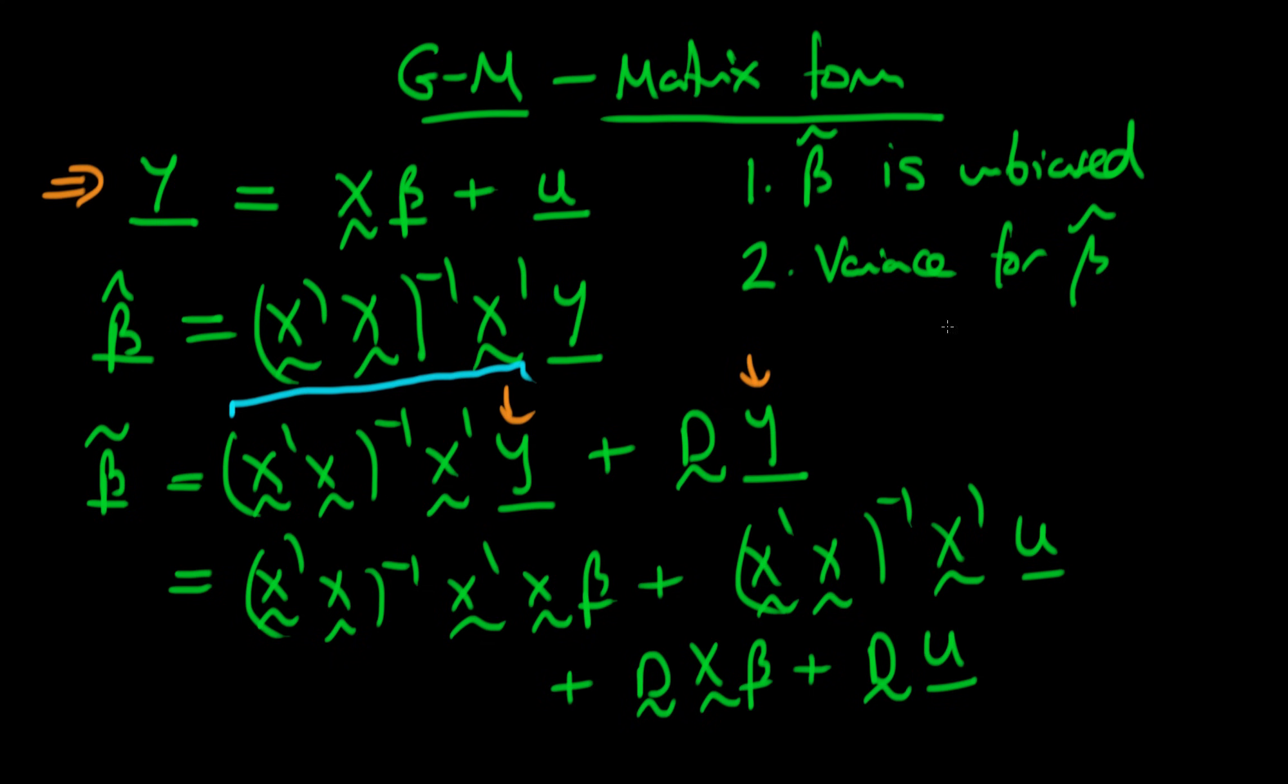That's our general form of our least squared estimator. Notice that we can cancel this X'X with this (X'X)^(-1) because I've got this matrix inverse times itself, so they cancel. I just get the identity matrix, so I've got beta tilde equals beta plus all this other stuff.